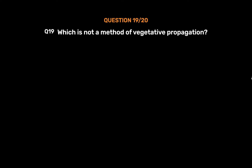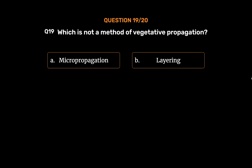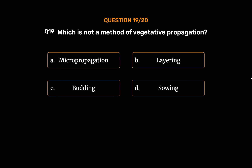Question No. 19: Which is not a method of vegetative propagation? Option A: Micropropagation. Option B: Layering. Option C: Budding. Option D: Sewing. The correct answer is Option D: Sewing.